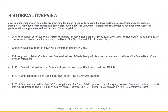However, in 2011 Oracle introduced two new commercial Java licenses: Java SE Advanced and Java SE Suite, and one more in 2014. Most recently — and probably the reason why most of you are here today — is Oracle's 2018 announcement that it will no longer provide free public updates of Java SE 8 for commercial users.